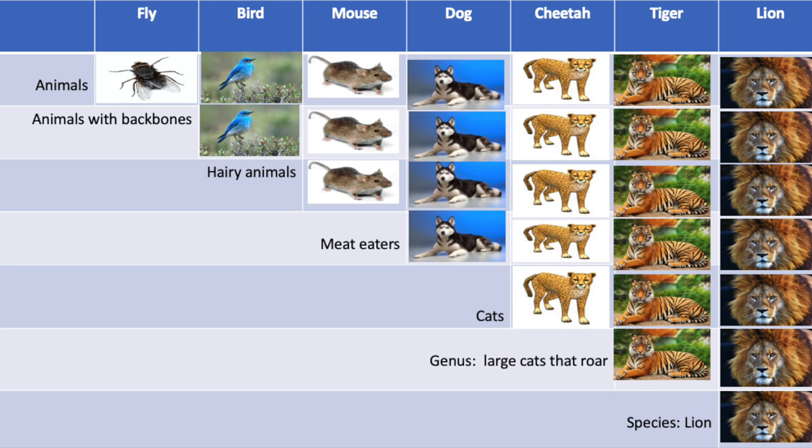Find the animals in the second row — they all, including the lion, have backbones. Notice that the fly isn't pictured in the second row; it doesn't have a backbone. As the groups get smaller, the animals in the group are more alike. Lions and tigers are in the same genus, a group of similar organisms. The animals in this group are all large cats that roar. Next comes species, a group of organisms of only one kind that can interbreed in nature. The species has only one kind of animal in it — the lion is the only kind of animal in its species.